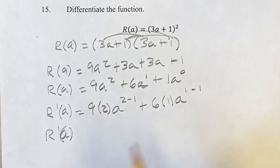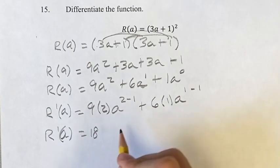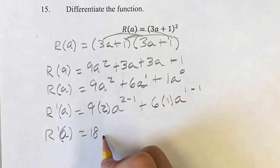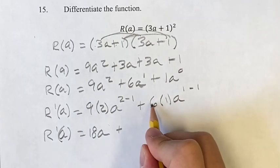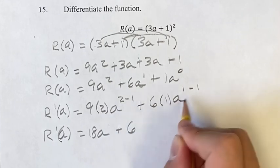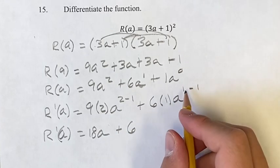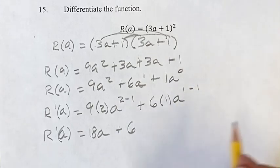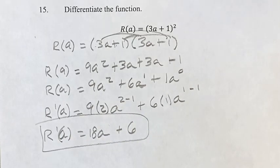But moving on and just simplifying this: 9 times 2 is 18 times a^(2-1) = a¹. a¹ is just a, plus 6 times 1 times a⁰. Anything to the 0 is just 1, so it's basically 6 times 1, which is just 6. So we can leave this as it is, and that's going to be your final answer: 18a + 6.